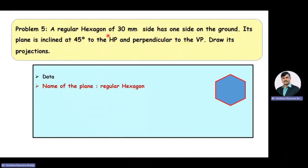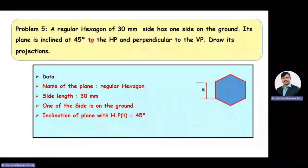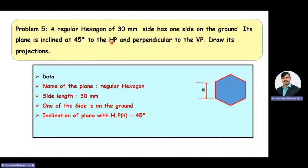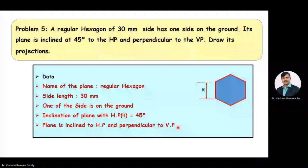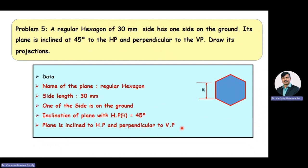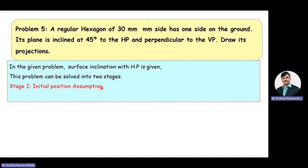Now we'll extract the data from the given problem. The name of the plane is regular hexagon and its side length is 30 mm. One side of the hexagon is on the ground. The hexagonal plane is making an angle of 45 degrees to the HP. The inclination of the plane with HP is denoted by theta, so theta equals 45 degrees. Since the plane is inclined to the HP and perpendicular to the VP, this problem can be solved in two stages.